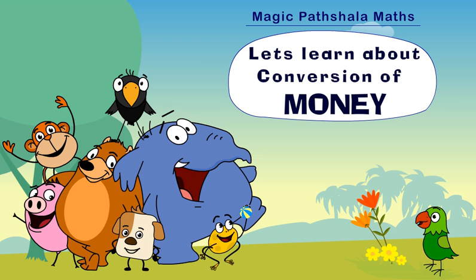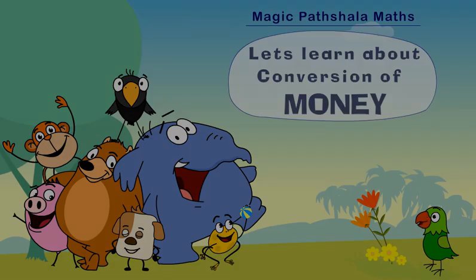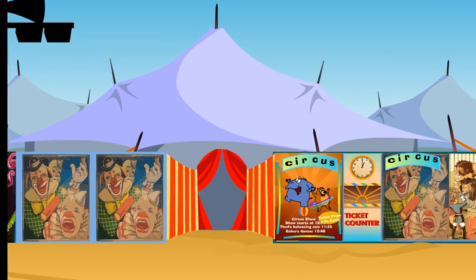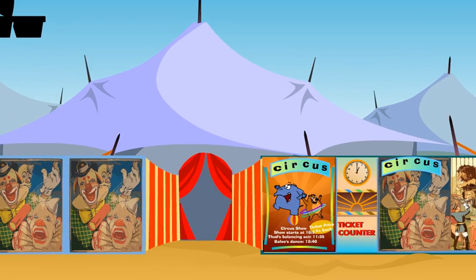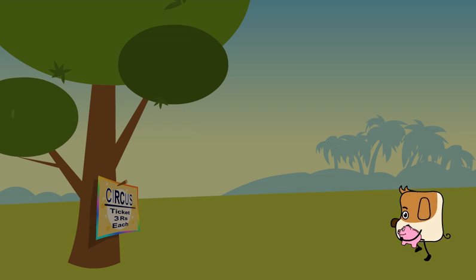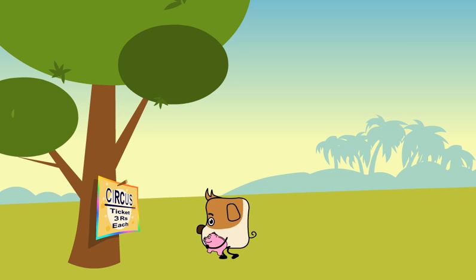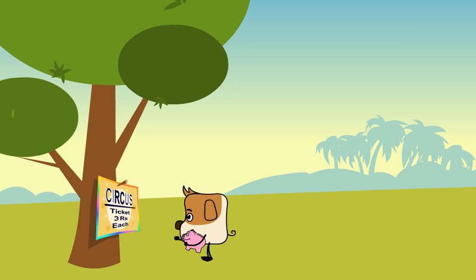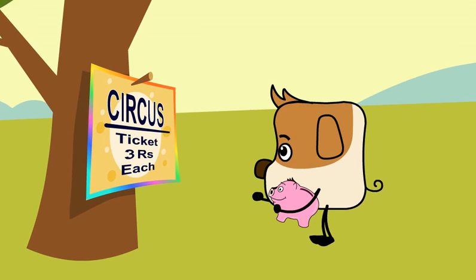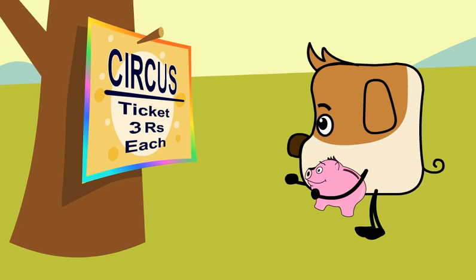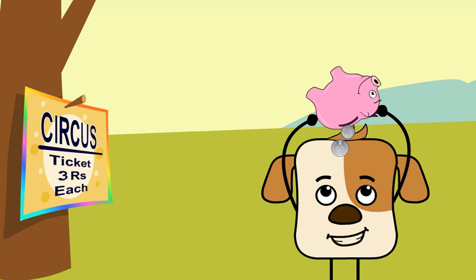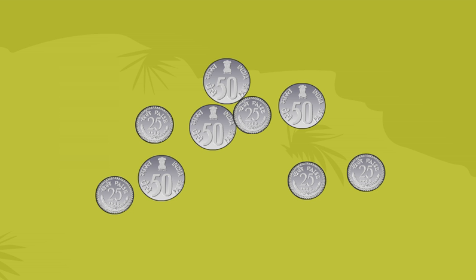Let's learn about conversion of money. The circus is in town — Gul wants to see the circus show. The ticket is for three rupees. Let's see how much money Gul has in his bank. Let's count the coins.